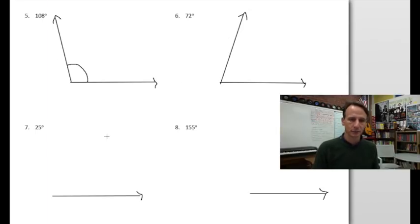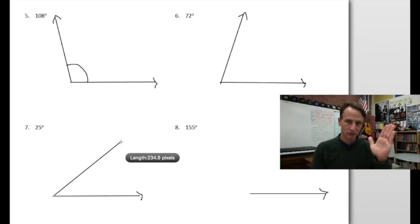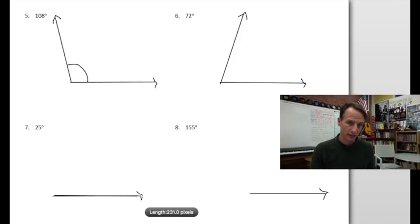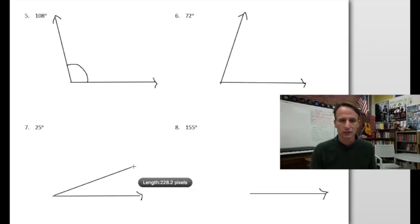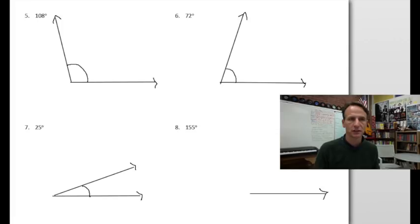25 degrees, finally we're getting something a little different here. If this is 90 and this is 45, and halfway between zero and 45, here's zero, 45, 25 is going to be about in the middle. 22.5 would be the actual middle so it's going to be about half of a 45 degree angle, definitely acute. Should look something like that. Draw your arrow for the ray and the arc to indicate this is the angle that's measured.